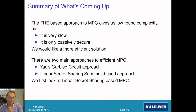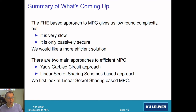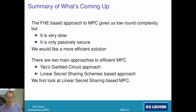So this FHE-based approach to MPC gives us really low round complexity, but it's very slow and only passively secure. We'd like a more efficient solution that is actively secure and not so slow. So how do we trade these things off?